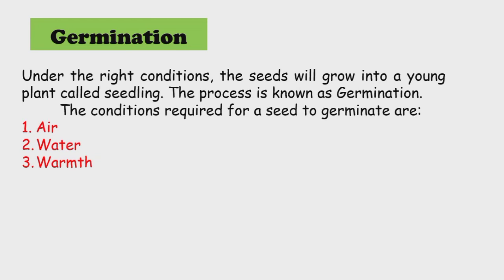Next is germination. In the germination process, seeds need the right conditions so they will grow into a young plant called a seedling. This process is known as germination. The conditions required for a seed to germinate are air, water, and warmth.